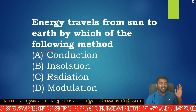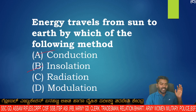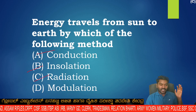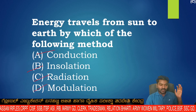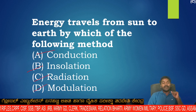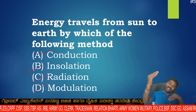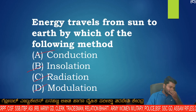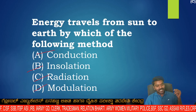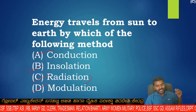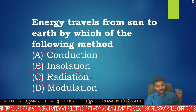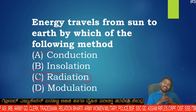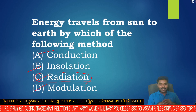The options are conduction, insulation, radiation, and modulation. Energy travels from the sun to earth by radiation. Radiation is the method of energy transfer from the sun to the earth.